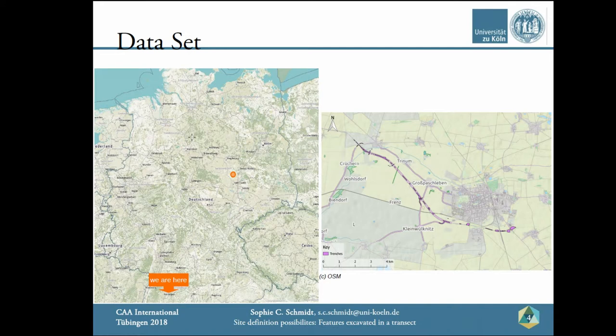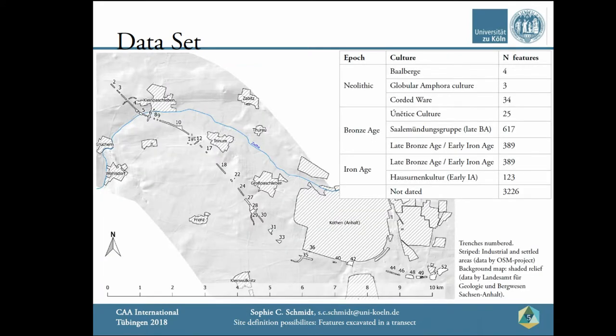The time frame I look at begins around 4000 BC, which is the middle Neolithic, and ends with the early Iron Age, about 50 BC. There are 4,770 features catalogued as belonging to these periods or as undated, and you can see the specific number of settlement features belonging to each period in this table. It is easy to see that only with the beginning of the late Neolithic — the Corded Ware culture — were enough features for statistical analysis excavated.